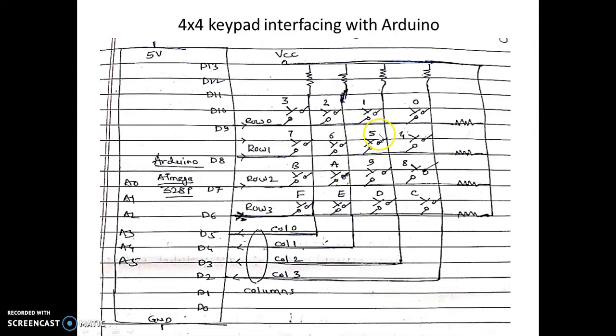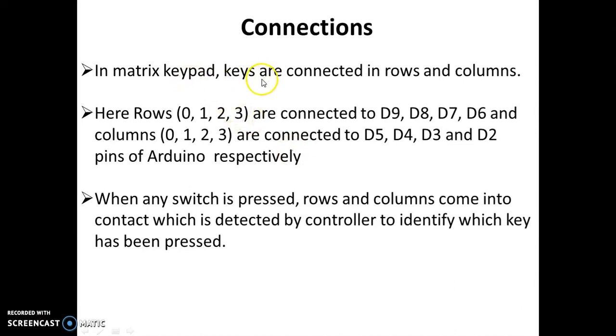So these are the connections in matrix keypad. Keys are connected in rows and columns. Here rows 0, 1, 2, 3 are connected to D9, D8, D7, D6 and columns 0, 1, 2, 3 are connected to D5, D4, D3, D2 pins of Arduino respectively.